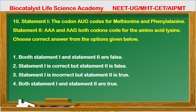Question 10: Statement one — the codon AUG codes for methionine and phenylalanine. AUG codes only for methionine, not phenylalanine — so statement one is incorrect. Statement two — AAA and AAG, both codons code for the amino acid lysine — yes, both these codons are present for lysine, so statement two is correct. Therefore, statement one is incorrect but statement two is true — this is the correct answer.